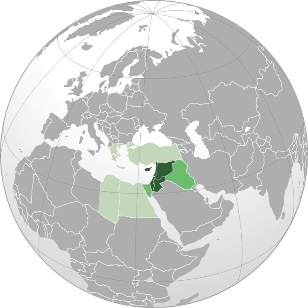In 1581, England set up the Levant Company to monopolize commerce with the Ottoman Empire. The name Levant States was used to refer to the French Mandate over Syria and Lebanon after World War I. This is probably the reason why the term Levant has come to be used more specifically to refer to modern Syria, Lebanon, Palestine, Israel, Jordan, and Cyprus.